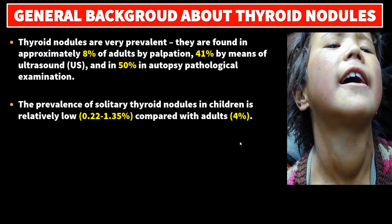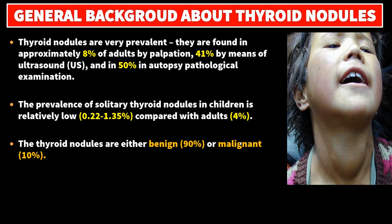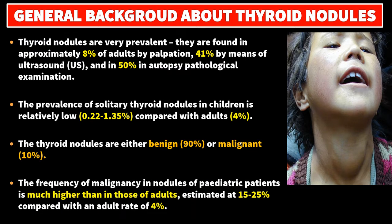The prevalence of solitary thyroid nodules in children is relatively low, 0.22 to 1.35%, compared with adults at 4%. Thyroid nodules are either benign — 90% — or malignant — 10%. The frequency of malignancy in nodules of pediatric patients is much higher than in adults, estimated at 15% to 25%, compared with an adult rate of 4%.